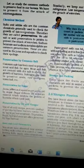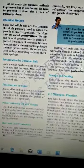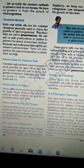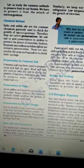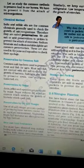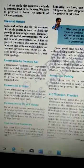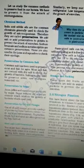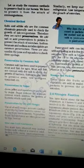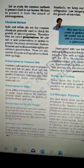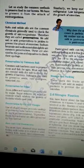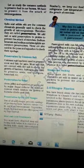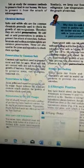What is the chemical method? Salt and edible oil are the common chemicals generally used to check the growth of microorganisms. Therefore they are called preservatives. We add salt or acid preservatives to pickles to prevent the attack of microbes. Sodium benzoate and sodium metabisulphate are common preservatives. These are also used in jams and squashes to check their spoilage.